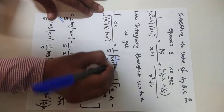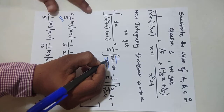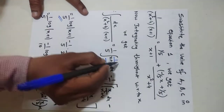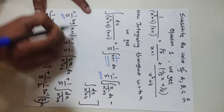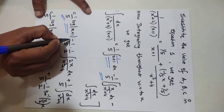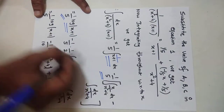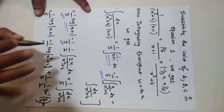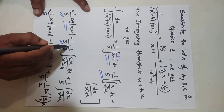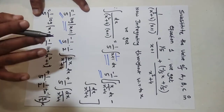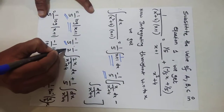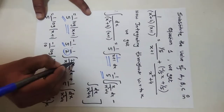The integral of 1/(x + 1) dx gives log|x + 1|. Then, minus 1/5 remains as it is for the next term. Since there is an x in the numerator, we need an adjustment.